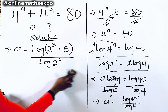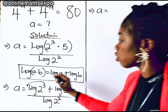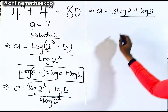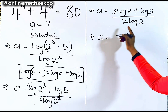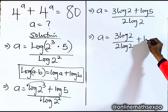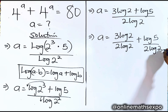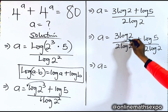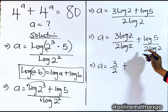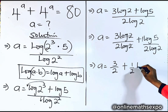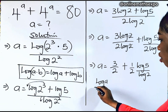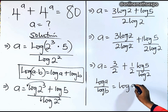So keep solving. A is equal to — remember, the power multiplies the log — so we get 3 log 2 plus log 5, all divided by 2 log 2. This can be split across the numerators, giving us 3 log 2 divided by 2 log 2, plus log 5 divided by 2 log 2. Simplifying: the log 2 terms cancel, leaving 3 over 2 plus one-half times log 5 divided by log 2.